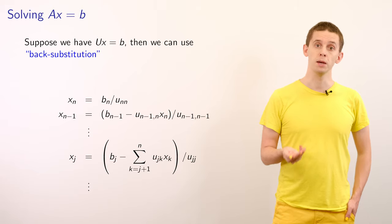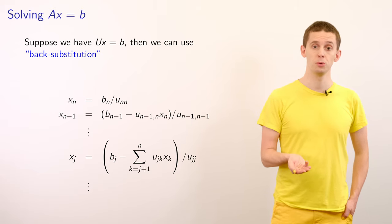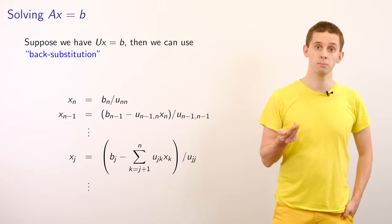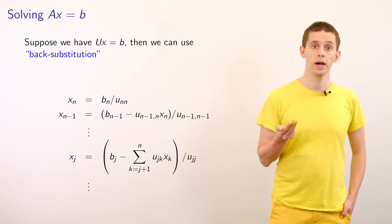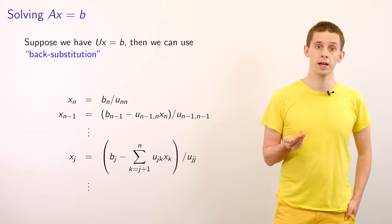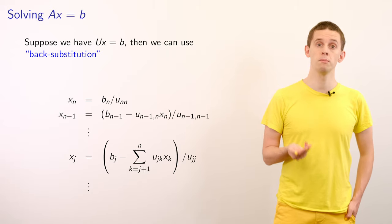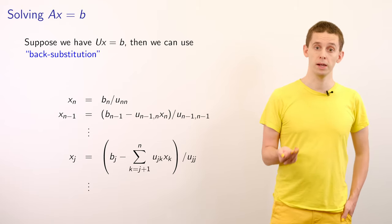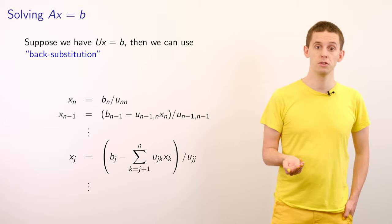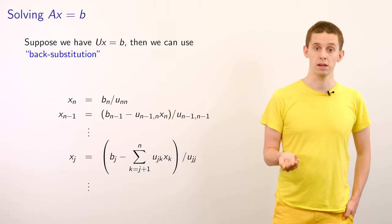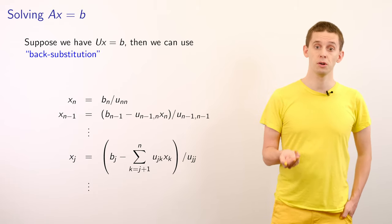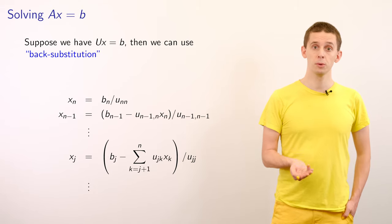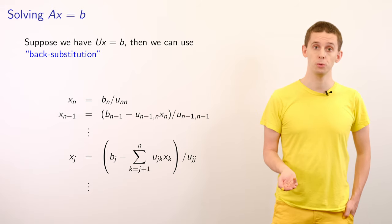Suppose we have a matrix problem of the form Ux = B for an upper triangular matrix U. We can solve this system directly using back substitution. The final entry of the linear system gives us x_n = B_n / U_nn, which we can immediately calculate. The penultimate line gives x_{n-1} = (B_{n-1} - U_{n-1,n} * x_n) / U_{n-1,n-1}. Since we've already solved for x_n, we can solve for x_{n-1}, and following this procedure we can explicitly calculate all components of x.